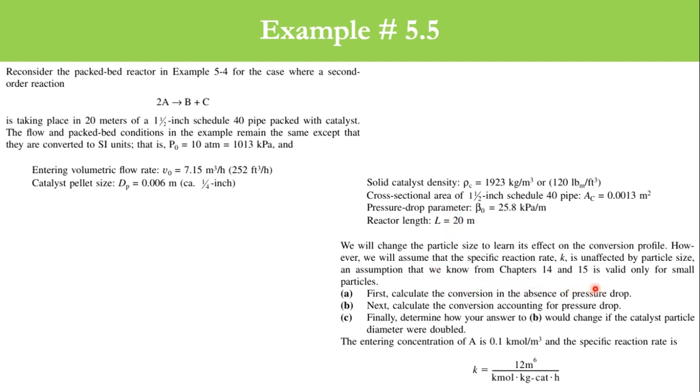Now what we need to do: First, calculate the conversion in the absence of pressure drop. This example will highlight the effect of pressure drop on conversion. In the second part, we will consider the pressure drop and calculate the conversion. In the third part, we will determine how the answer from B changes